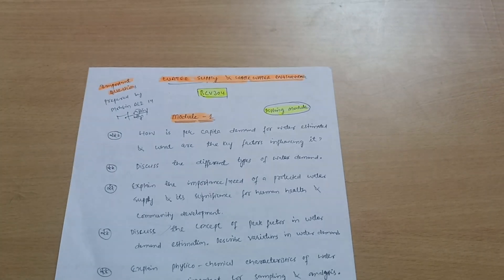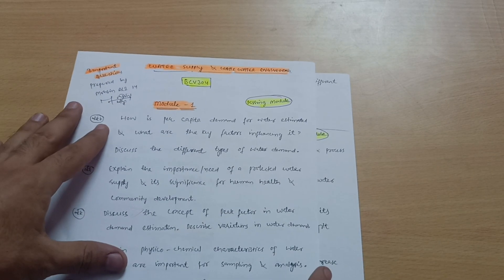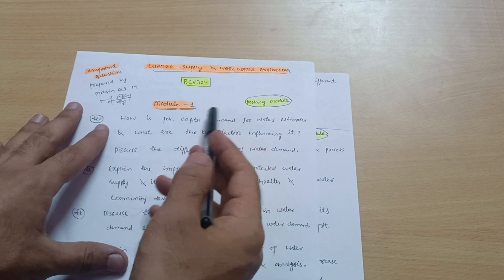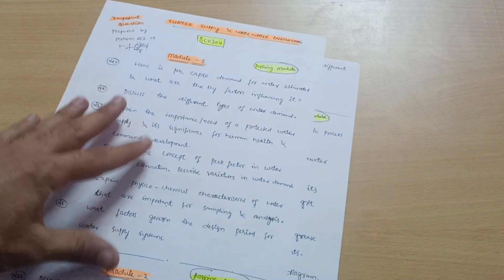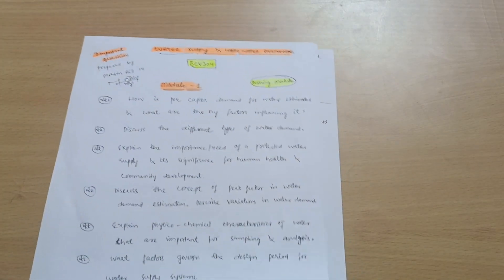If somebody wants to pass only, they have to cover three modules fully. The passing modules are: Module 1 is a passing module, Module 2 is a passing module, and Module 4 is a passing module.